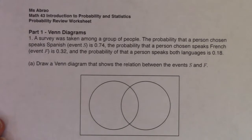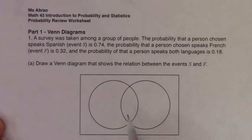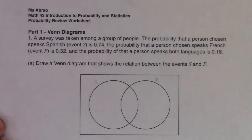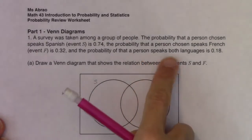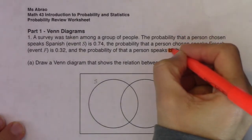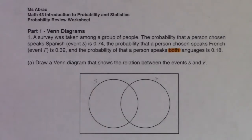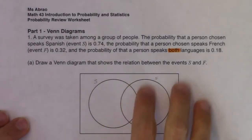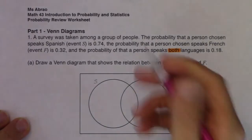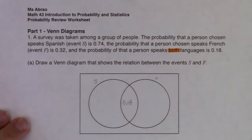Let's set up the Venn diagram. I'll label S over here and F over here. There's overlap because I spotted the buzzword 'both' — some folks speak both languages. When creating a Venn diagram, it's always good to work from the inside out. So I'll start with the football — the intersection — and then extend to the larger circles. The football gets 0.18, the likelihood that somebody speaks both languages — 18% of folks in the survey.